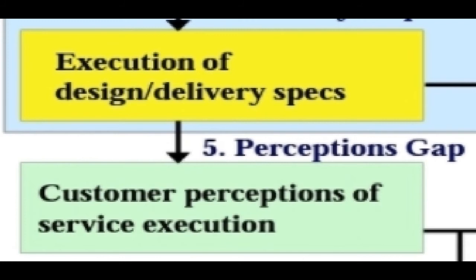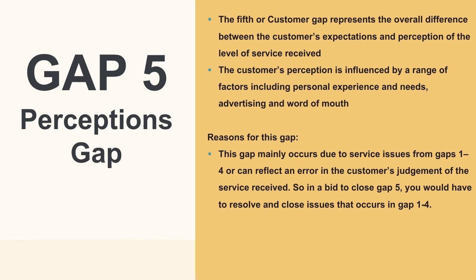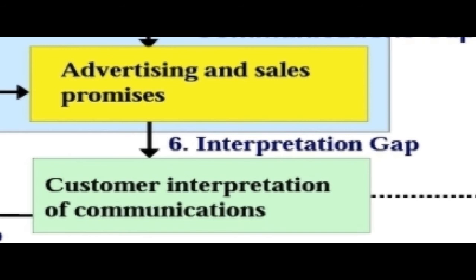Gap number five is the perception gap — the difference between the customer's expectations and their perception of the level of service received. The customer's expectation is influenced by factors including personal experience, needs, advertising, and word of mouth. This gap occurs from issues in gaps one through four and is reflected by errors in judgment of the service received. To close gap five, we need to ensure gaps one through four are addressed.